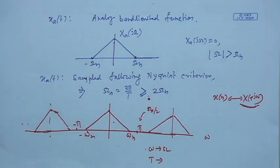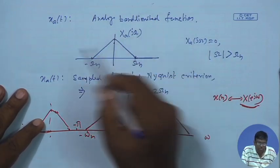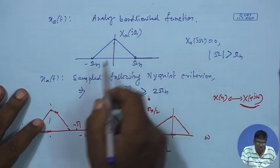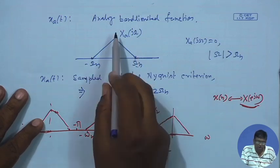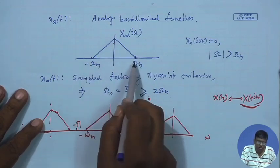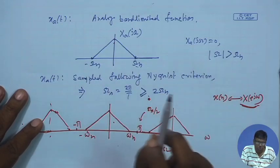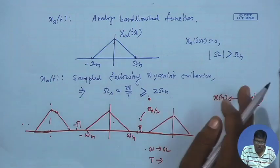An analog signal that is band-limited means that if you take the analog Fourier transform, it is limited from minus omega_h to omega_h, where h stands for the highest frequency. The magnitude is zero outside this zone, and this signal is sampled to generate a sequence.